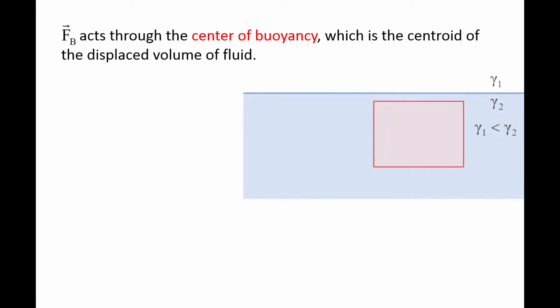On the right, there is a rectangular block that is completely submerged in a liquid of specific weight gamma 2. A different fluid with a lower specific weight, gamma 1, floats on top of the liquid. The lighter fluid on top could be a gas or a different liquid. The buoyant force acts at the center of the block and has a magnitude of gamma 2 times the total volume of the block.